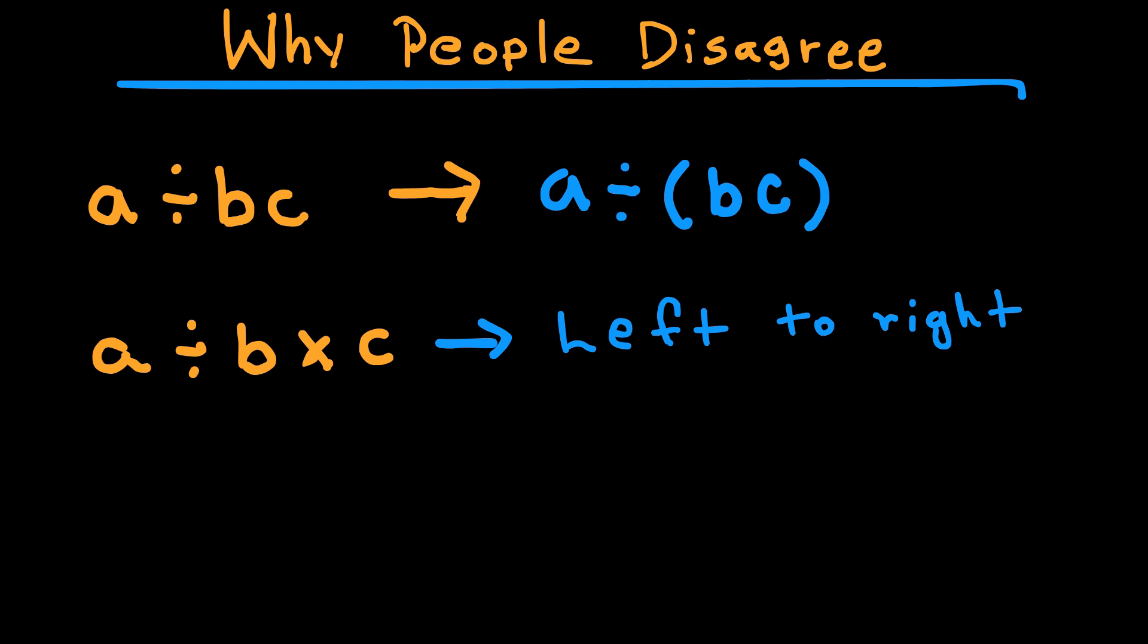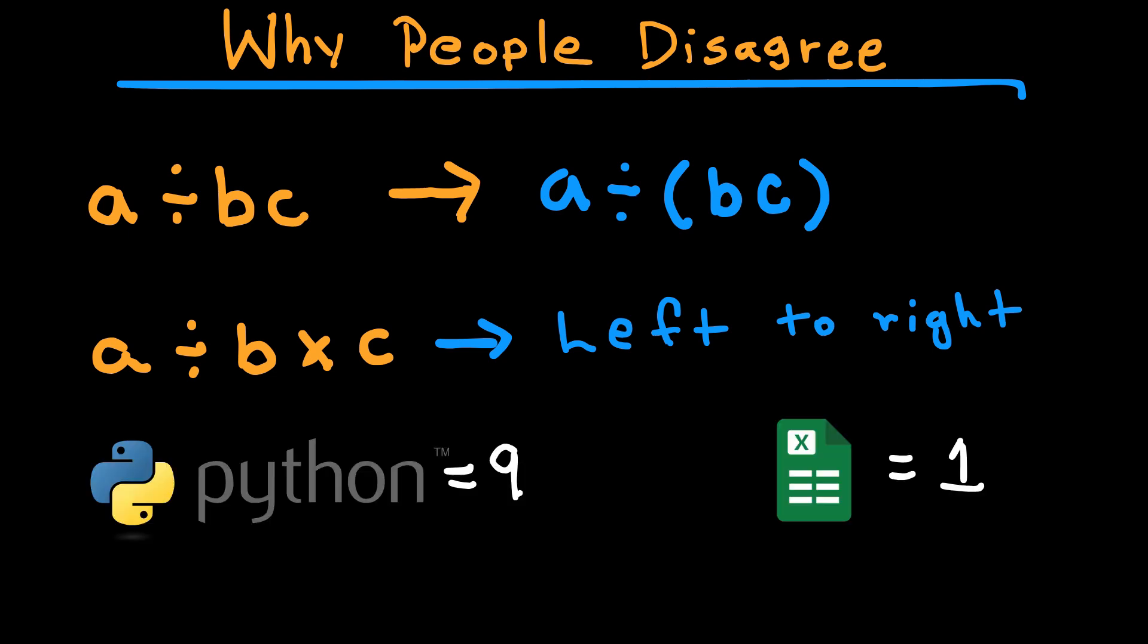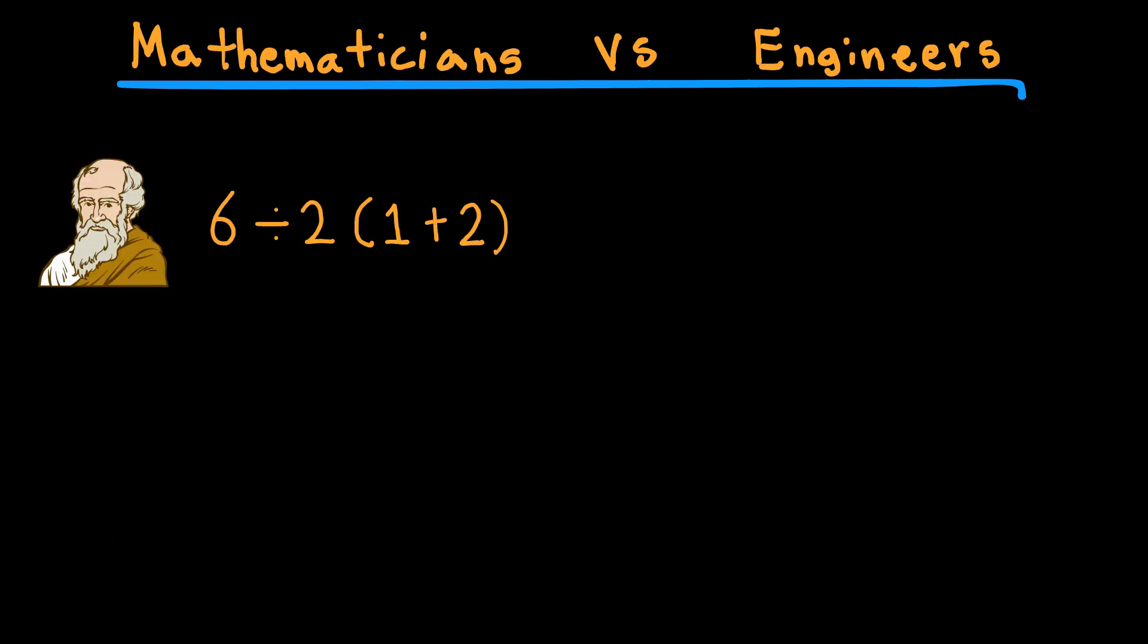In Python, the answer is 9. In older versions of Excel, it was 1. So which interpretation is correct? Let's throw in some real-world examples.